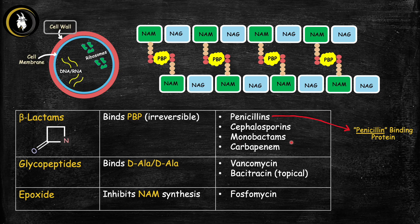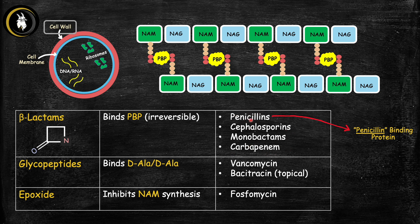Now let's learn about the cell wall inhibitors. There are three main classes: beta-lactams, glycopeptides, and epoxides. Beta-lactams contain a beta-lactam ring that mimics d-ala-d-ala residues, fooling penicillin-binding protein and binding it irreversibly — knocking it out so there's no cross-linking, the wall weakens, and bacteria lyse. The four major beta-lactam classes are penicillins, cephalosporins, monobactams, and carbapenems. Carbapenem has 'pen' in its name because it's a penicillin derivative, and 'monobactam' sounds like beta-lactam — good ways to remember them.